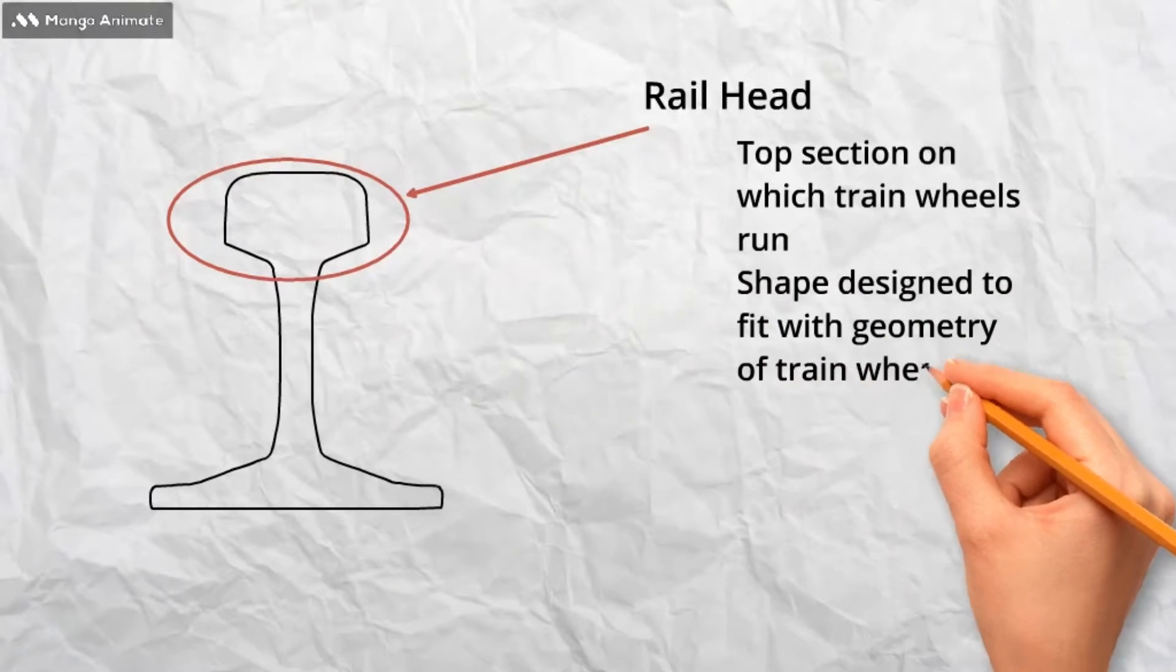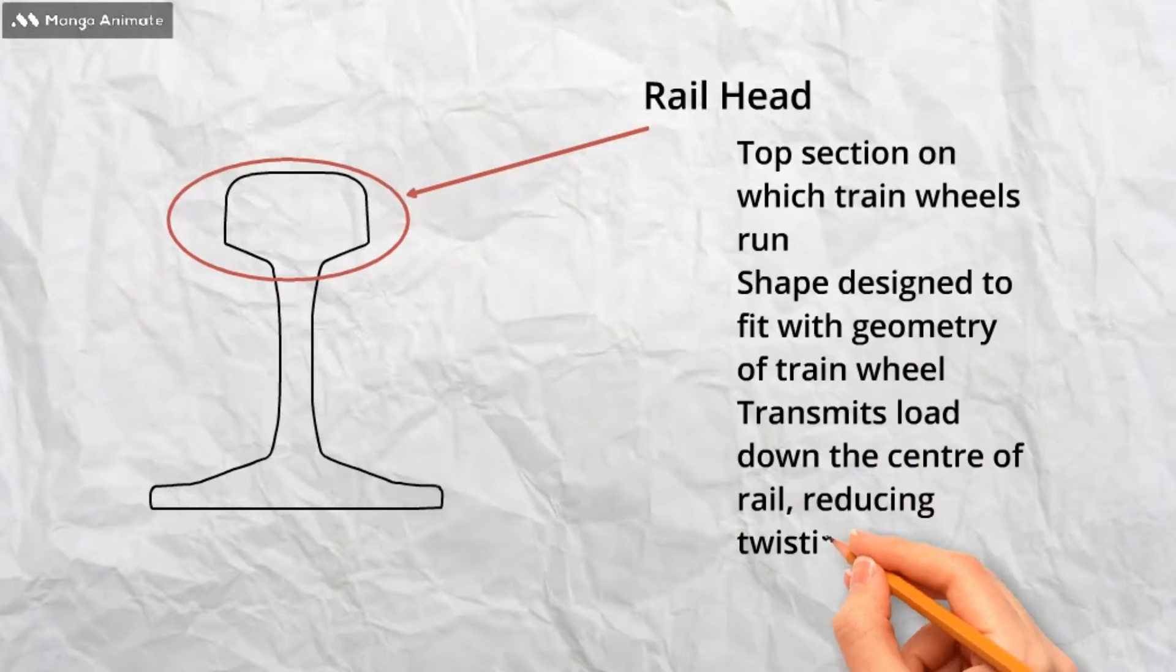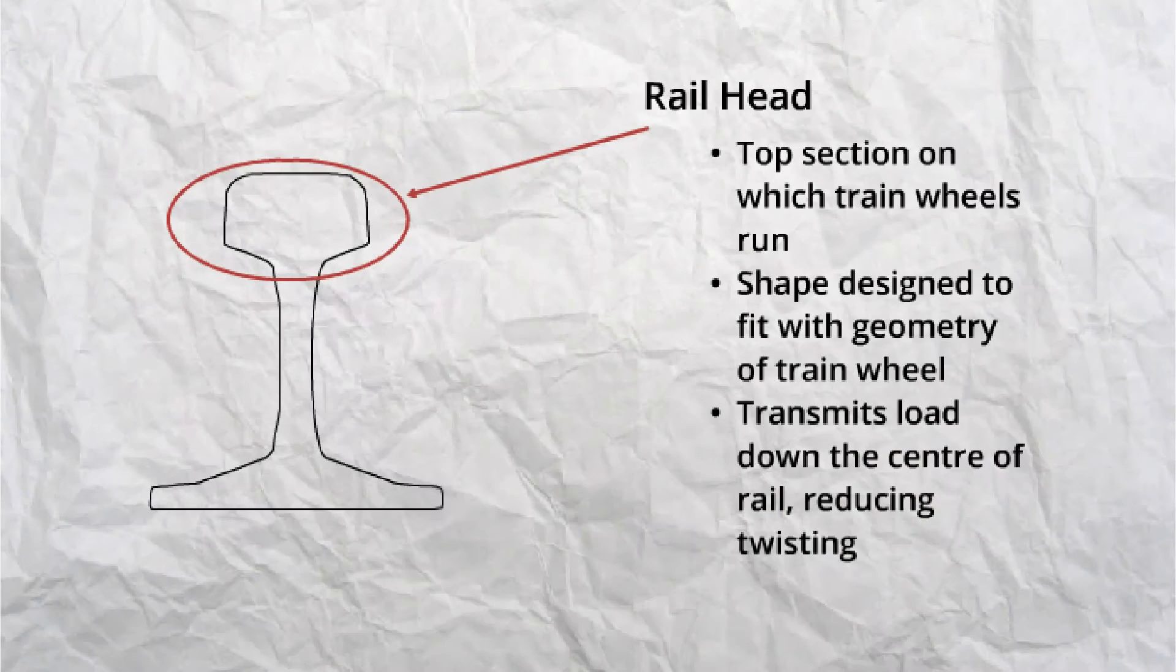The shape also helps when the rail is inclined at 1 in 20 as it is in the UK to transmit the force down through the center line of the rail, reducing the twisting effect that would occur if the force was closer to the edge.